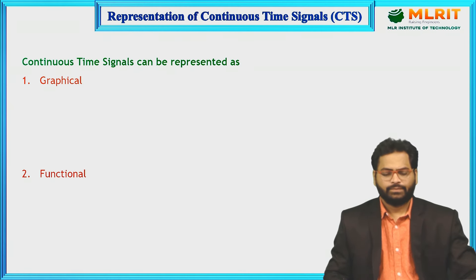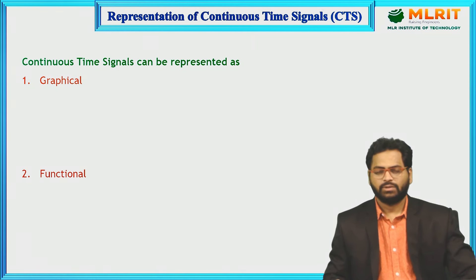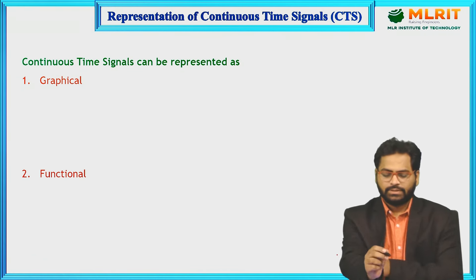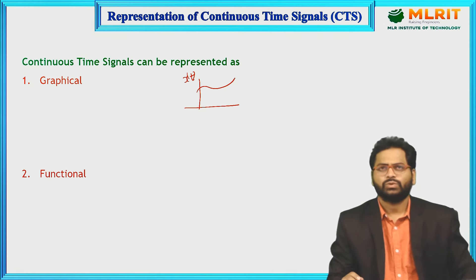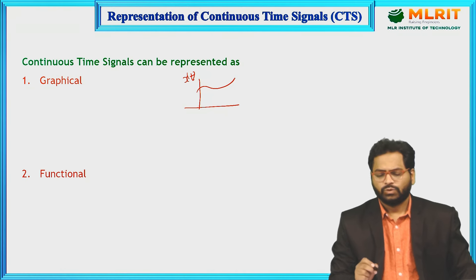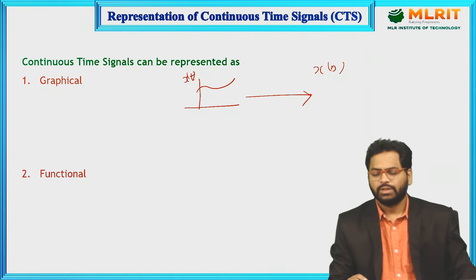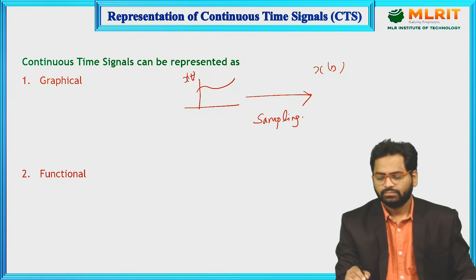In continuous time signal, we can represent in graphical and functional format. To give some clarity on what is the main difference between discrete and continuous signals: one signal like a continuous signal is x(t) — this is a continuous time signal. We need to convert this signal into the discrete time signal, let us say x(n). This process is known as the sampling process.